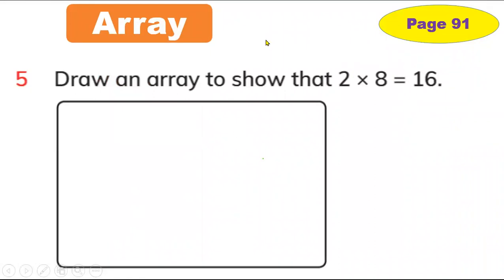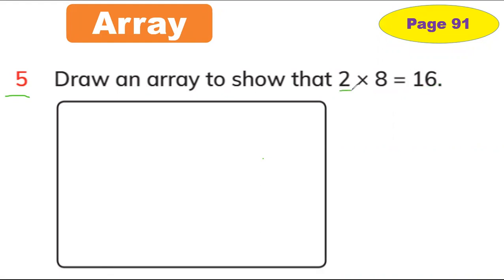In this question it's the opposite — we don't have pictures. We don't have beans, we don't have chocolates, so we have to draw an array. Draw means you have to draw any object you can choose: circles, triangles, flowers, a football — whatever you like to make the multiplication fact. So first of all, what is the two? Two is the row.